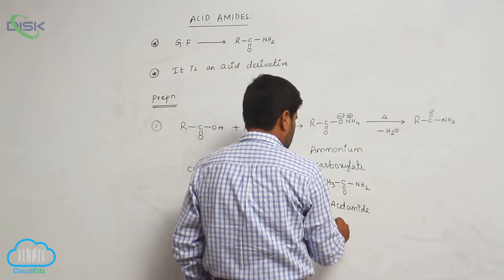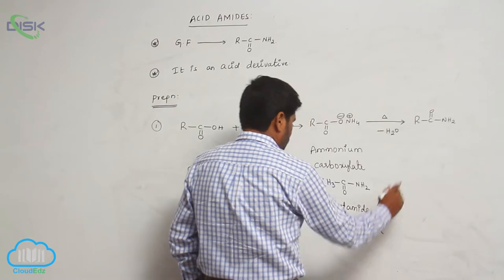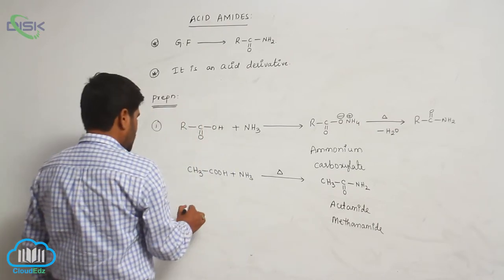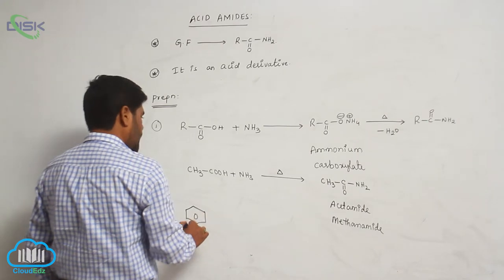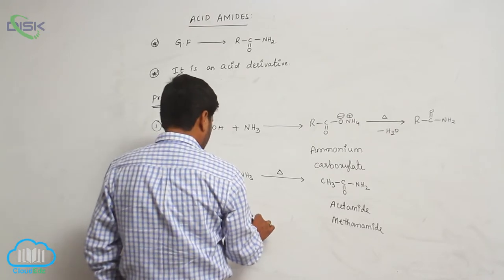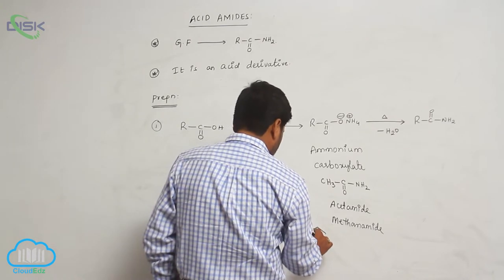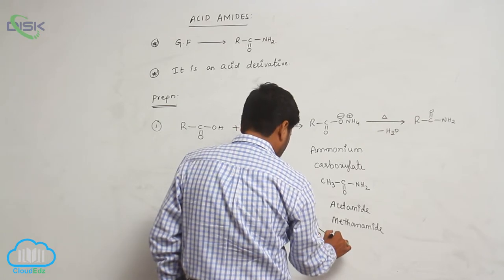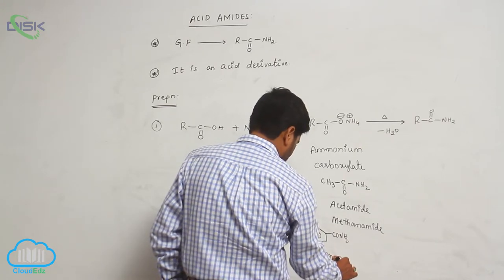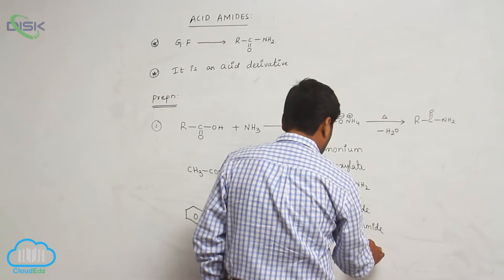The IUPAC name, with two carbons, is ethanamide. When benzoic acid is heated with ammonia, it forms benzamide. Loss of a water molecule takes place.